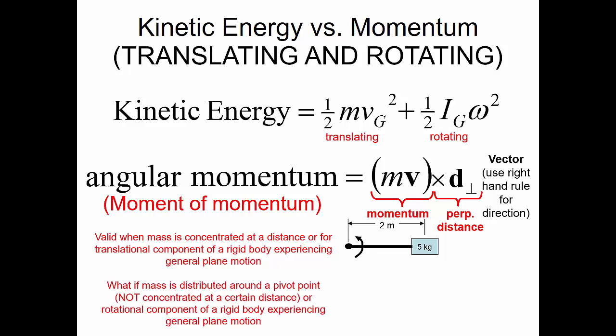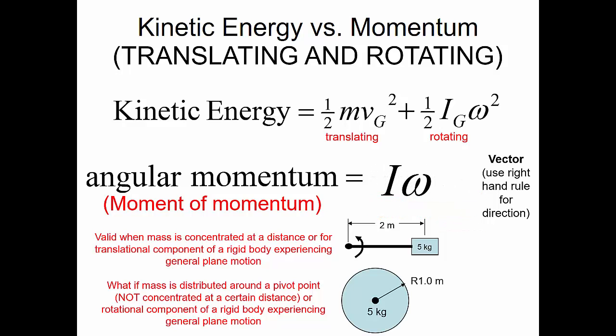What if the mass is distributed around the pivot point — not concentrated at a certain distance? Or what if we're looking at the rotational component of a rigid body experiencing general plane motion, like a disc that's rotating? In this case, angular momentum is the mass moment of inertia times the angular velocity. So for a concentrated mass or the translational component of a rotating body, we use moment of momentum: mass times velocity times perpendicular distance. For a distributed mass, we use mass moment of inertia times angular velocity.